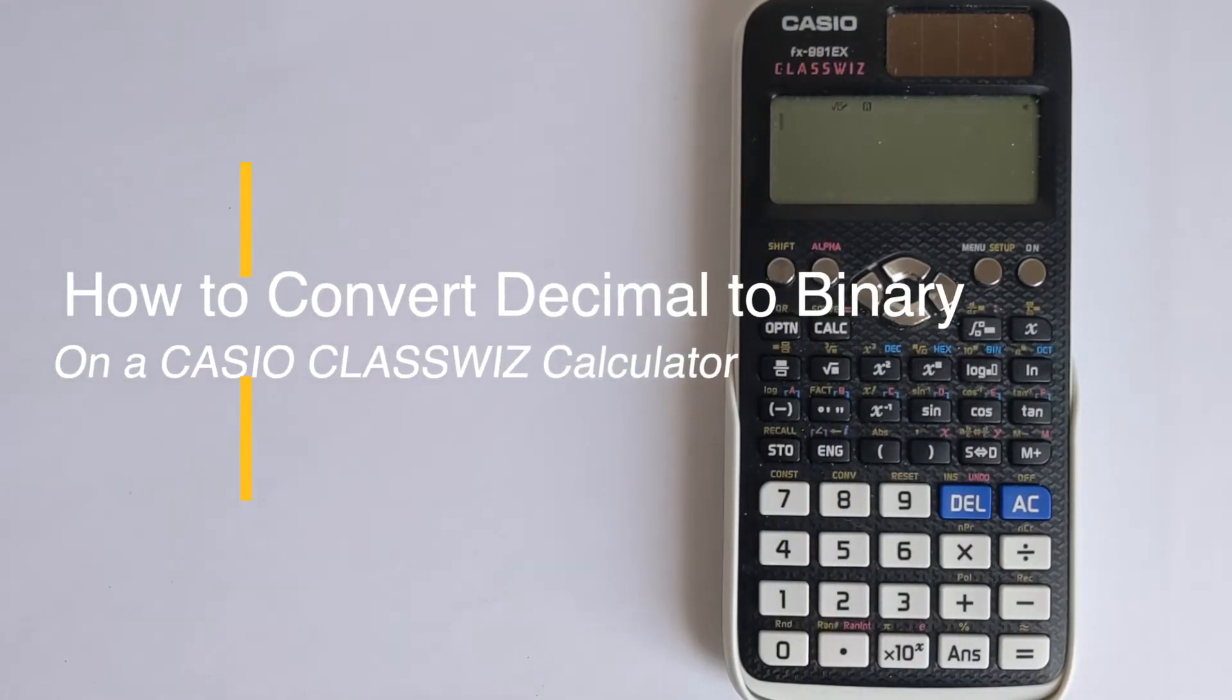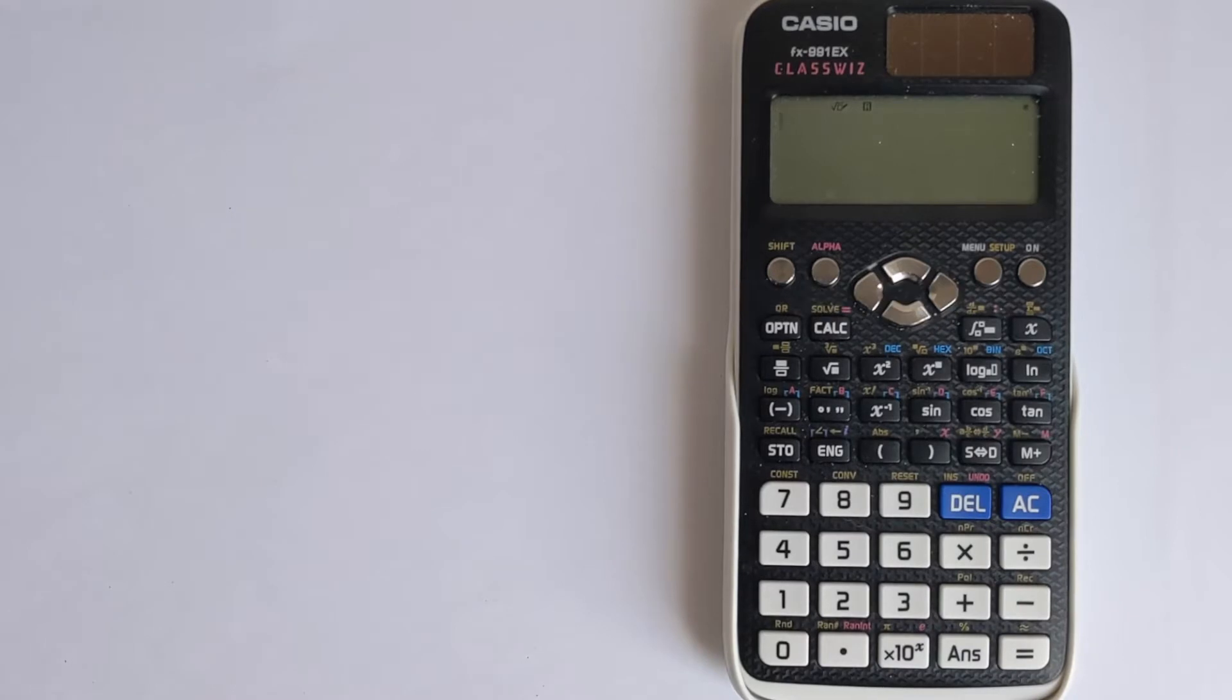In this video I'm going to show you how you can convert between binary and decimal using a Casio ClassWiz calculator. We'll look at an example of converting decimal to binary and then an example of binary to decimal.